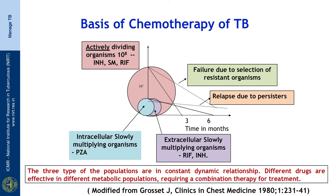If you look at rate of kill, it is rifampicin which kills fastest. When it comes to intracellular slowly growing bacteria, which exist in an acidic pH, the drug most effective is pyrazinamide. For the slowly dividing persisting bacteria, INH and rifampicin are most effective.